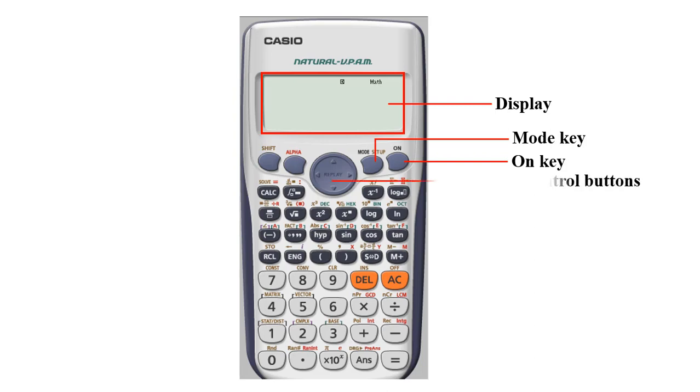So move to the next one which is the cursor control buttons. If you want to scroll up you use this particular key. If you want to scroll down you use this particular key. If you want to control to the left and then to the right, of course you navigate using this particular key as you can see here.